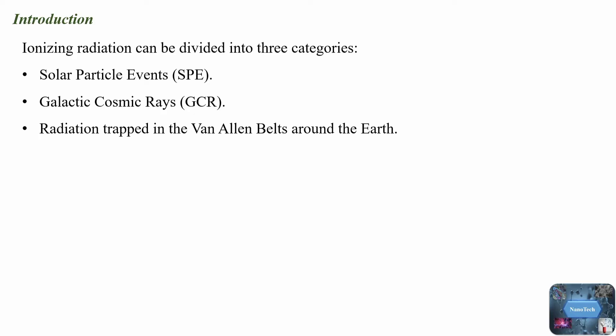Ionizing radiation can be divided into three categories: solar particle events, galactic cosmic rays, and radiation trapped in the Van Allen belts around the Earth. Let's explain in details.